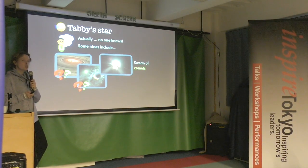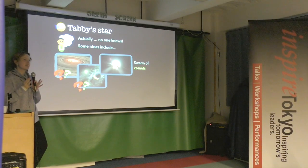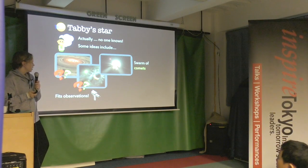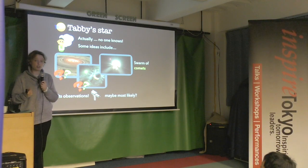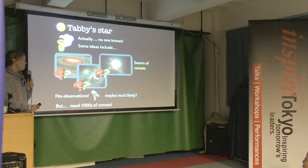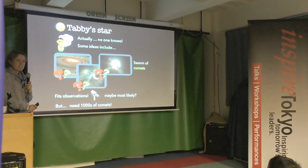Another idea: a huge swarm of comets on very elliptical orbits — thousands of them — bombarding the star, disappearing and coming back in inconsistent numbers, producing these strange peaks. When many are together we get a very large dip. This actually does fit the observations — but you need thousands of comets, which is a little unlikely and we've never seen a system with this many.